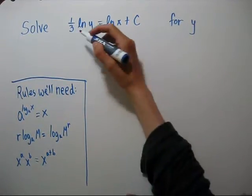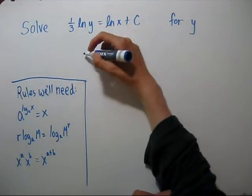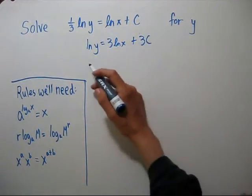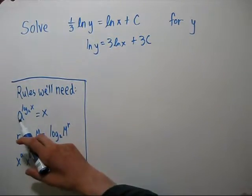We can get rid of the one-third by multiplying both sides of the equation by three. We can get rid of the natural log by using this rule.